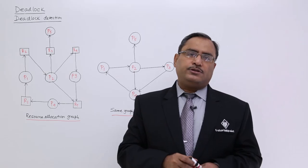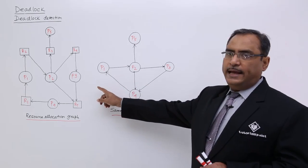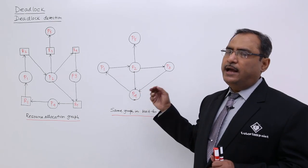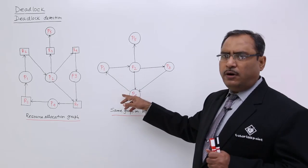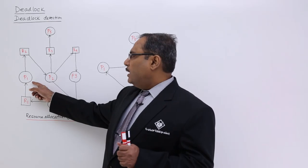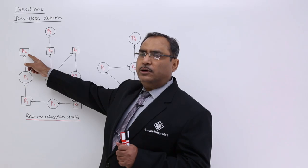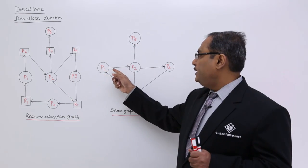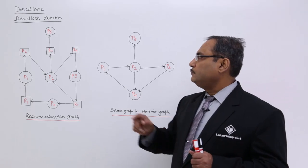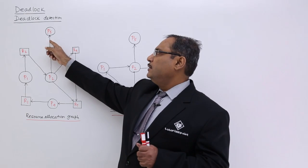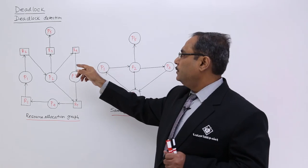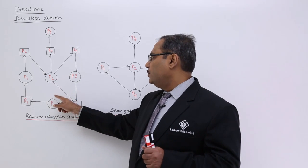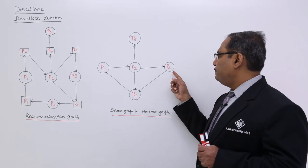Let me convert this resource allocation graph into the respective wait-for graph. In the wait-for graph, we do not have the resources — we have only directed edges and processes enclosed within circles. P1 has got R1 and is waiting for R2, but R2 is already allocated to P2, so P1 is waiting for the completion of P2. P5 is waiting for none, because P5 has got the instance R3 and is not waiting. P3 has got R4 but is waiting for R5, and R5 is allocated to P4, so P3 is waiting for P4's completion.